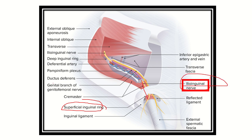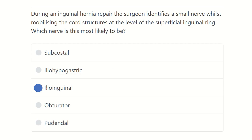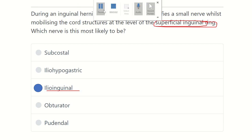Another nerve, the genital branch of the genitofemoral nerve, also passes in this region, but it passes through the spermatic cord. The ilioinguinal nerve, however, is located outside the spermatic cord. So our answer is the ilioinguinal nerve, which is present throughout almost the entire wall area including the superficial inguinal ring. Thank you.